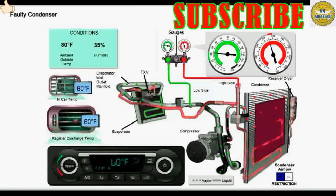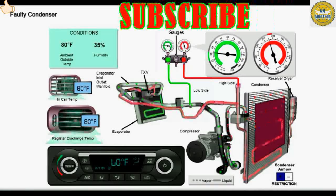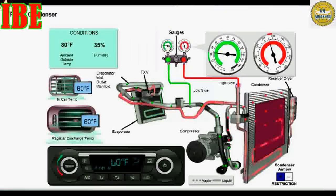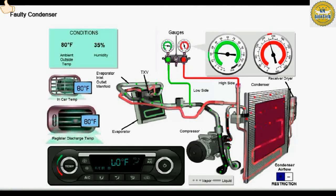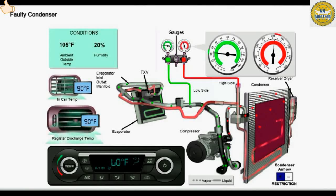When ambient temperature is 27 degrees Celsius (80 degrees Fahrenheit) and relative humidity is between 30 and 60 percent, the high side gauge will read above approximately 225 PSI, and low side pressure will be below approximately 21 PSI.